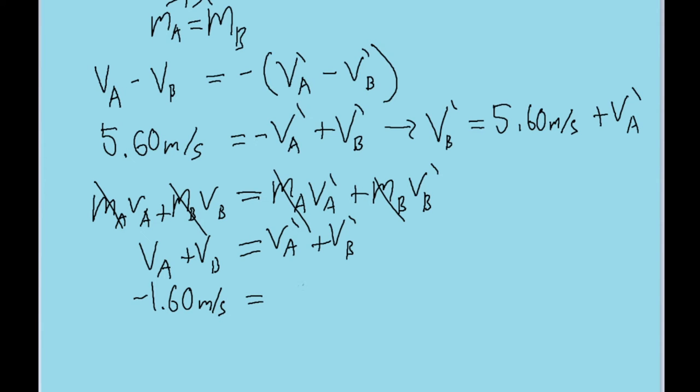And this part on the right, I'm going to say V_A prime plus, and instead of writing V_B prime, I'm going to plug in what we found V_B prime to be equal to. So the right side of the equation is V_A prime plus another V_A prime, plus 5.60 meters per second.